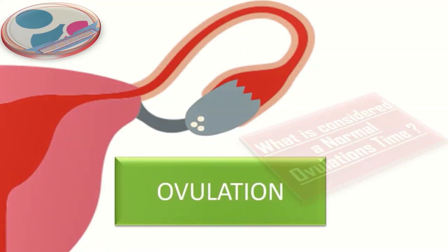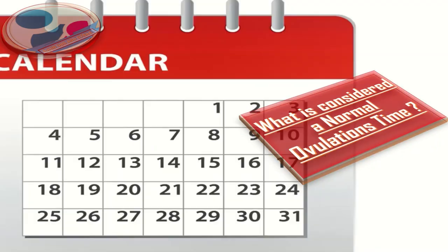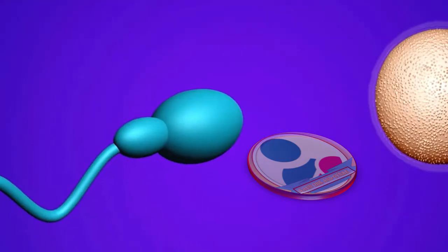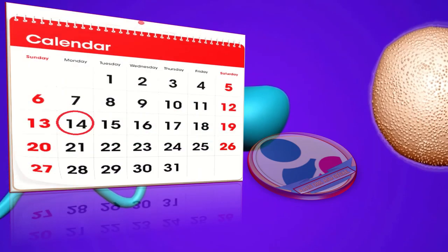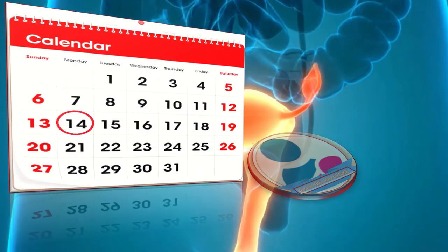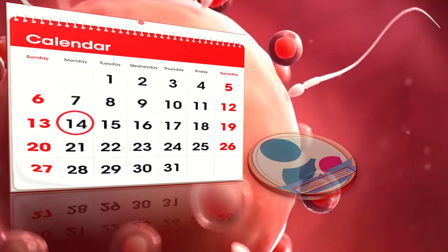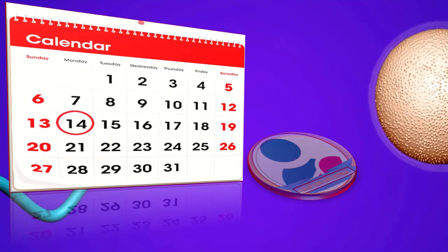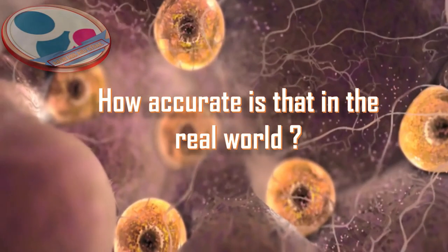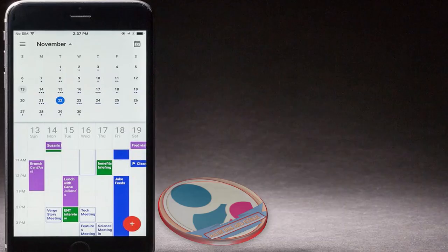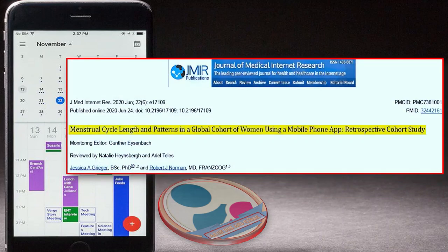What is considered the normal ovulation time? The general consensus is that the normal length of a menstrual cycle from one period to the next is 28 days, and ovulation normally occurs at day 14. But how accurate is that in the real world? A retrospective study was done on menstrual cycle lengths and patterns.